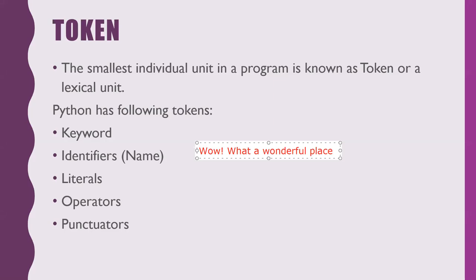In a sentence, we can have two types of tokens. For example, alphabets are one type of token, and exclamatory signs or full stops are punctuators — another type of token. So whatever we write in Python, including identifiers and punctuators, are all known as tokens.